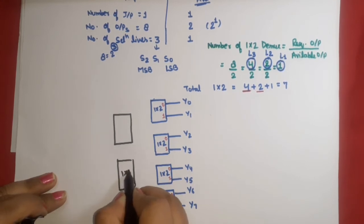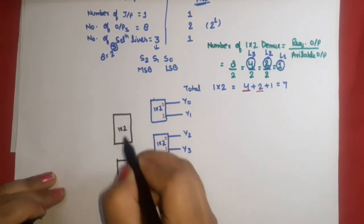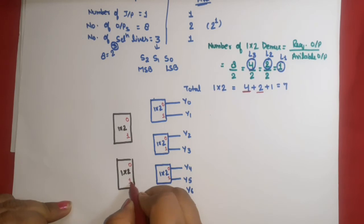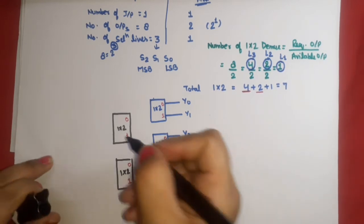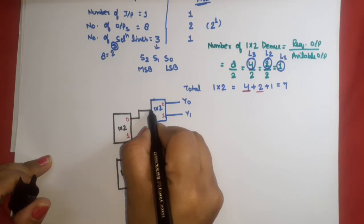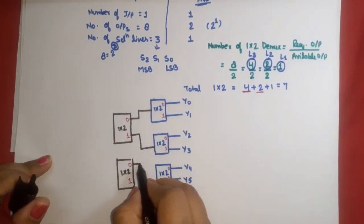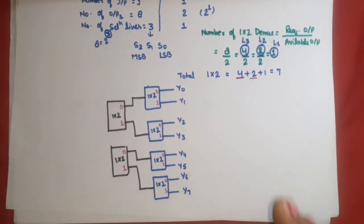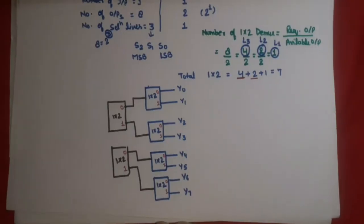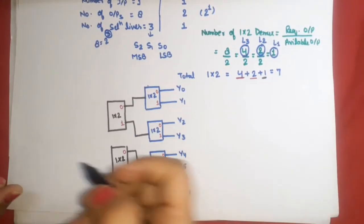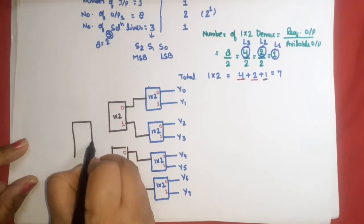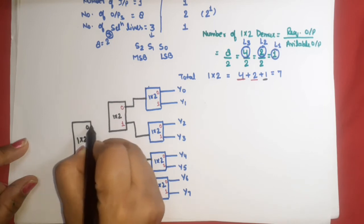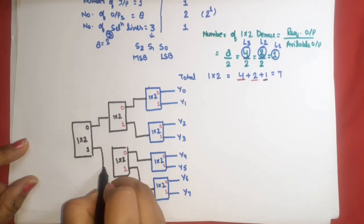At level 2, there are 2 demuxes — each having 2 outputs labeled 0 and 1. The first output of the level 2 first demux works as input for the level 3 first demux, and the second output works as input for the level 3 second demux. Similarly, the first output of the second level-2 demux works as input for the third level-3 demux, and its second output works as input for the fourth level-3 demux.